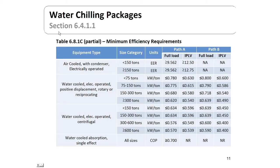For the larger water chilling packages, efficiencies are shown in terms of EER and in some cases KW per ton, based on whether the unit is air-cooled electrically operated, water-cooled electrically operated, or rotary or reciprocating chillers. At the bottom we even have absorption chillers. The chart is divided into size categories in tons of air conditioning, and efficiency ratios are shown for both full load and integrated part load values.